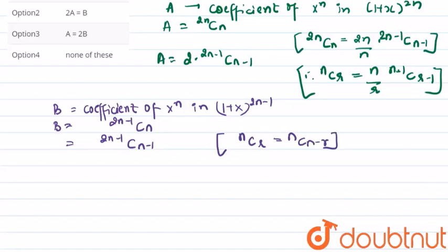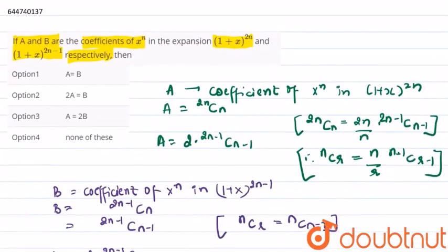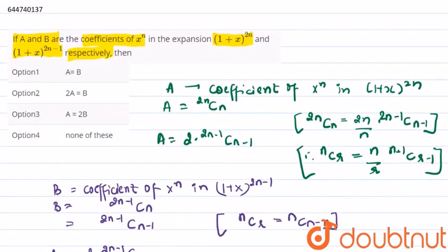So we have got that A is 2 into 2n minus 1 C n minus 1 which is A equal to twice of B. So now from this, we can say that A equal to 2B, option 3 is the correct answer.